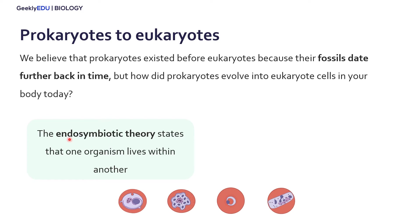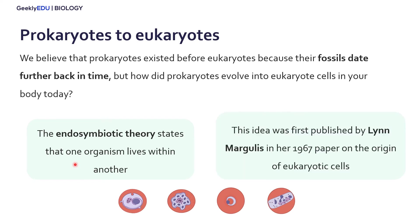What this theory really means is that one organism lives within another in a symbiotic relationship. This idea was first published by researcher Lynn Margulis in her 1967 paper on the origin of eukaryotic cells.